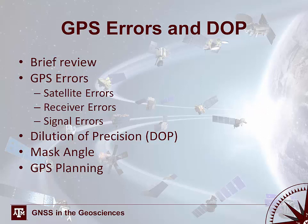This lecture is focused on GPS errors and dilution of precision, or DOP. We'll start with a brief review of key points from previous lectures, then cover GPS errors for the satellite, the receiver, and the signal. Following that, we'll discuss dilution of precision, the mask angle, and how the two are related but not the same. Finally, we'll cover effective GPS planning based on dilution of precision.